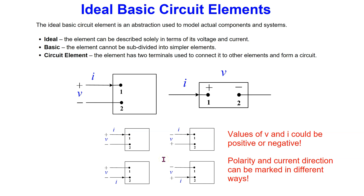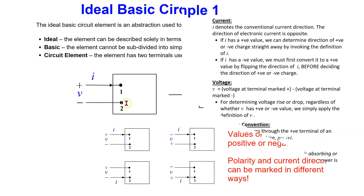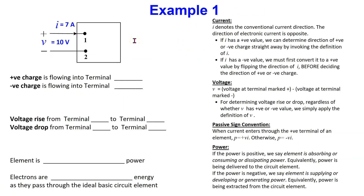Let us consider the first problem. The ideal basic circuit element is given where both voltage and current have positive values, as shown. The voltage polarity and current direction are marked. To determine the direction of charge, we invoke the definition of I. By convention, I denotes the conventional current, which is also the direction of positive charge.